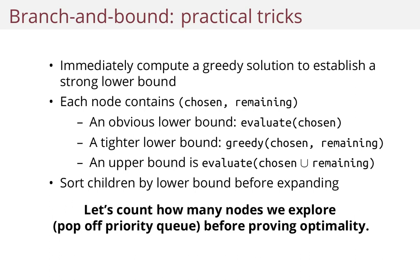Another trick that really made a difference is to sort the children by lower bound. What you want to do is start with the one which has the highest lower bound, because then you can prune away the other children in that branching. So you want to establish good lower bounds as quickly as possible. That really helps as well.